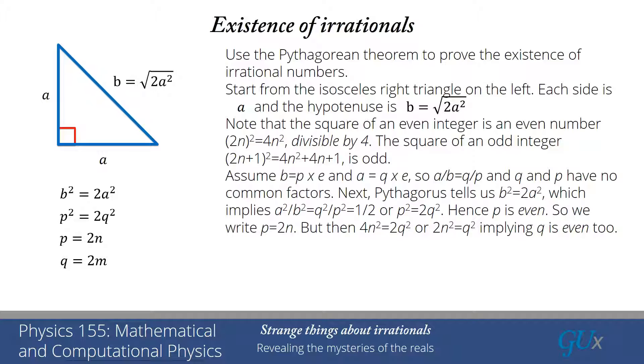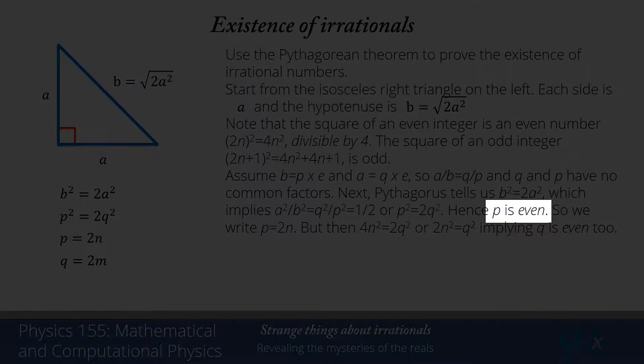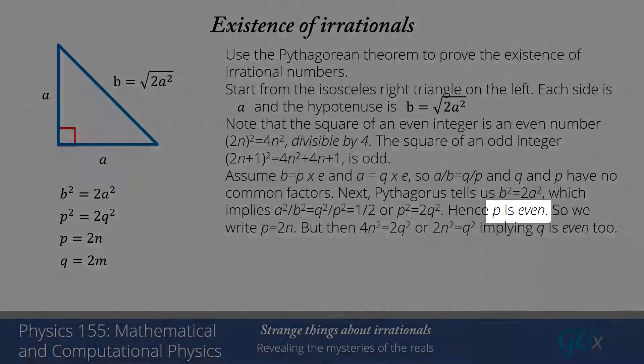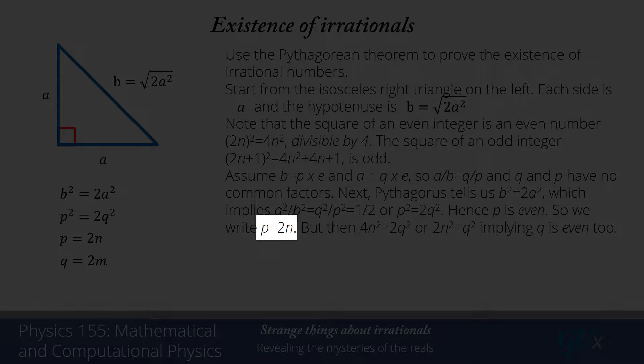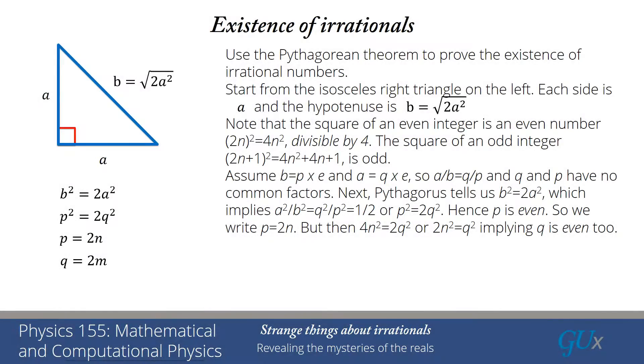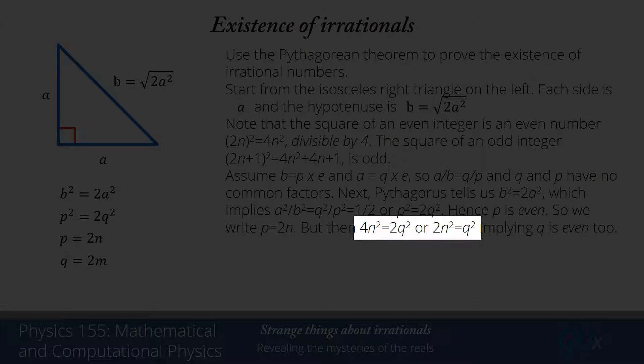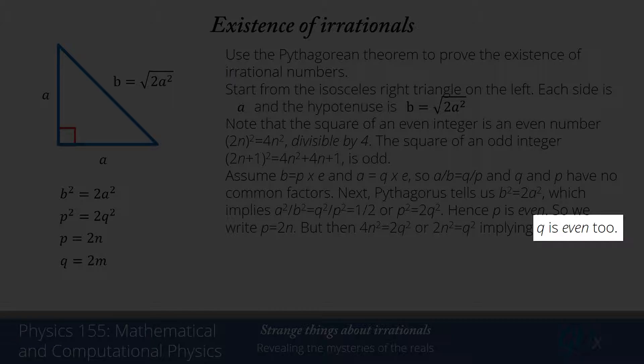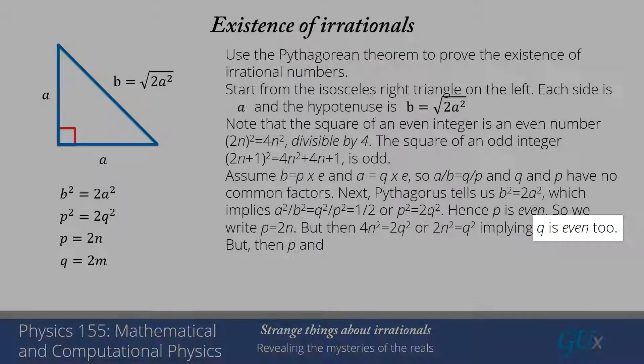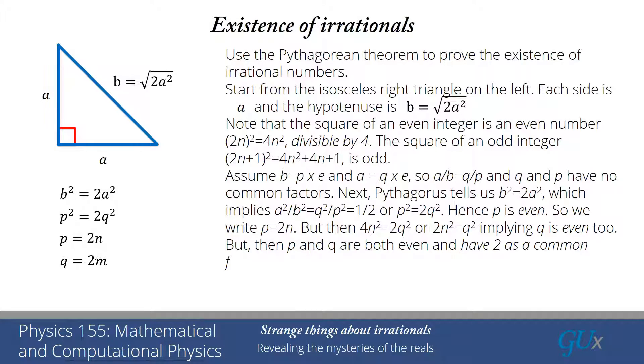The only way that p squared can equal 2q squared is that p is even, because we've just shown that the square of p is an even number, and only even numbers square to even numbers. Hence, p must be even. So we can write p equals 2n. When I square p, I get 4n squared equals 2q squared. I can cancel a 2 from both sides, and I'm left with 2n squared equals q squared. That means q squared is an even number, because it's 2 times n squared. So both p and q are even, implying I can write q equals 2m.